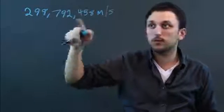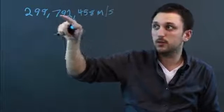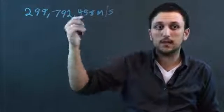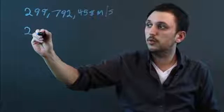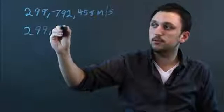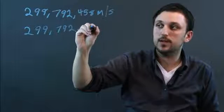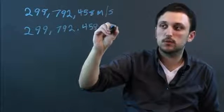So, if we want kilometers, we have to multiply by 1,000 meters, which means we divide this by 1,000. So, it would be 299,792.458 kilometers per second.